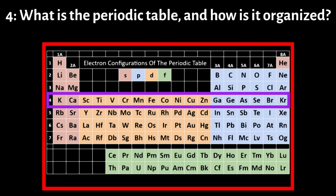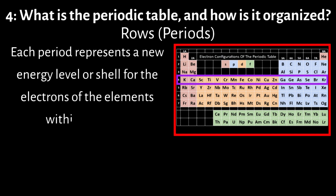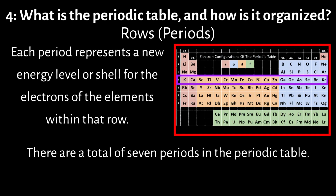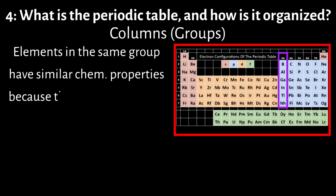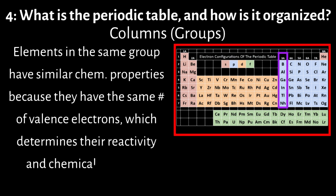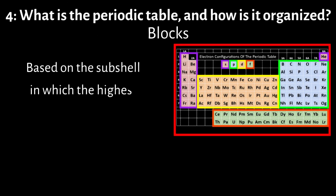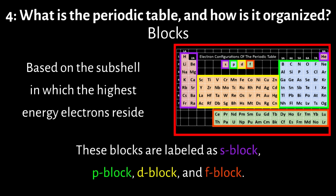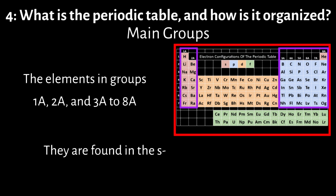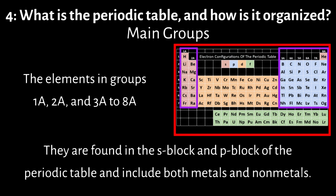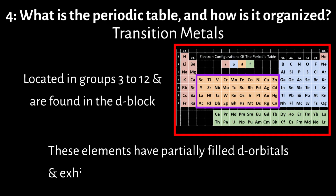The periodic table is divided into rows called periods — each period represents a new energy level or shell for the electrons of the elements within that row, and there are a total of seven periods. Elements are arranged in columns called groups or families; elements within the same group have similar chemical properties because they have the same number of valence electrons, which determines their reactivity and chemical behavior. There are 18 groups. The table is further divided into blocks — S-block, P-block, D-block, and F-block — based on the subshell in which the highest energy electrons reside. The transition metals are located in groups 3 to 12 in the D-block, with partially filled D-orbitals.